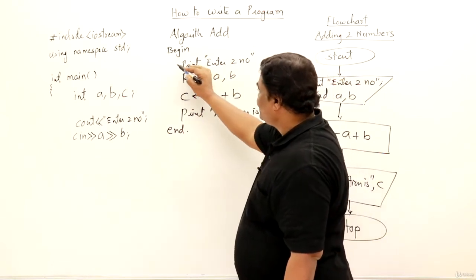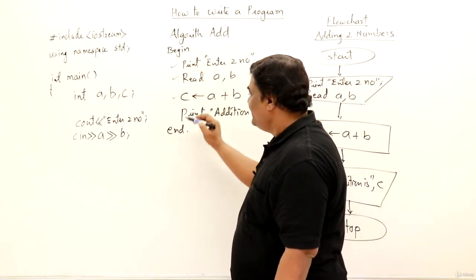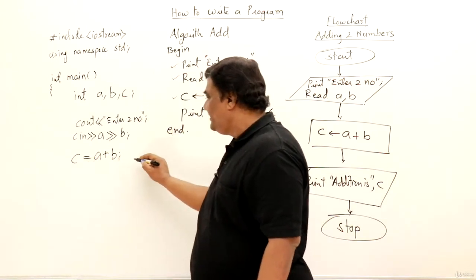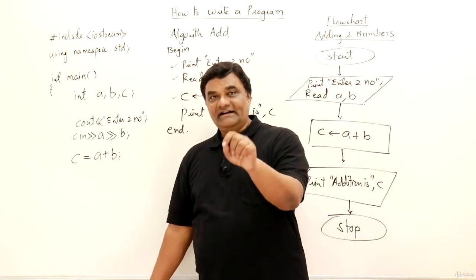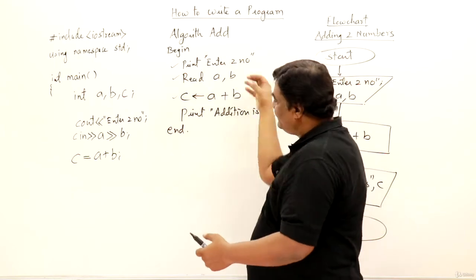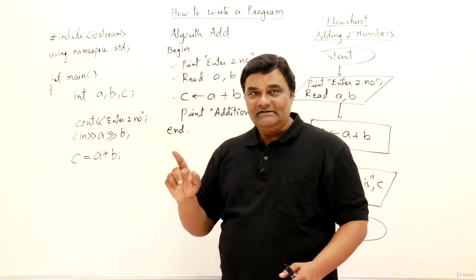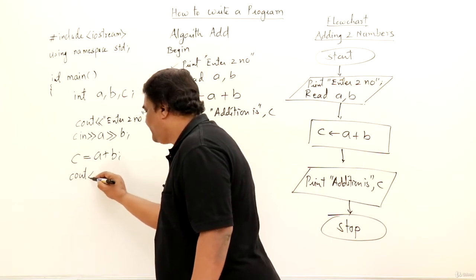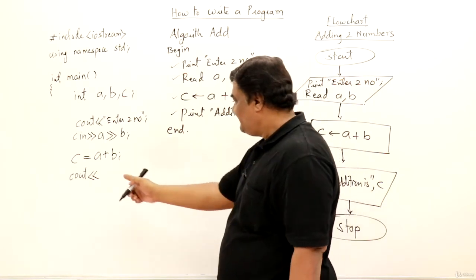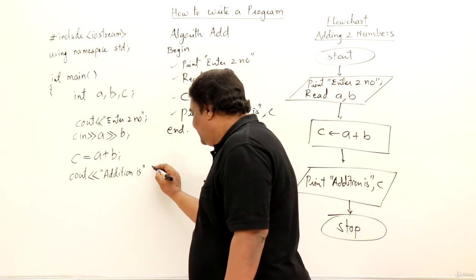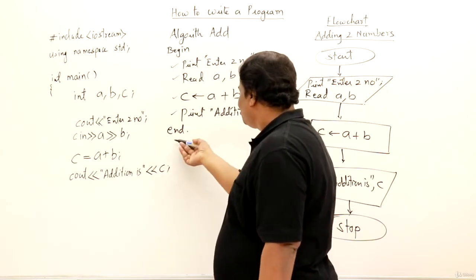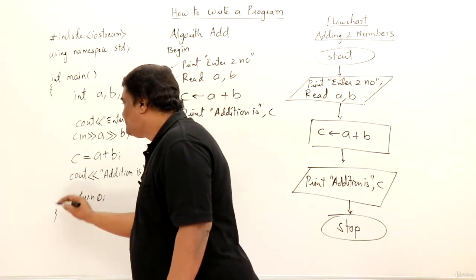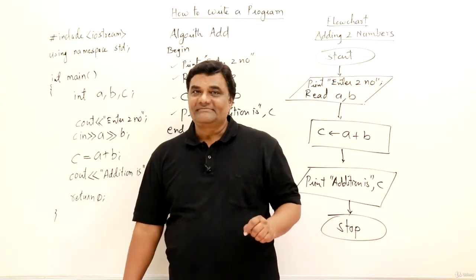Now the next step: C equal to A plus B. But don't read it as equal to — read it as assign. This means: add A and B, and the result is stored in C. Now the last thing remaining — we have to print output. So cout 'Addition is' in quotes, then double less-than, then C. That's all. End. So here inside the main function we must write return 0 — that is always required because we have written int here. This is a complete C++ program for adding two numbers.